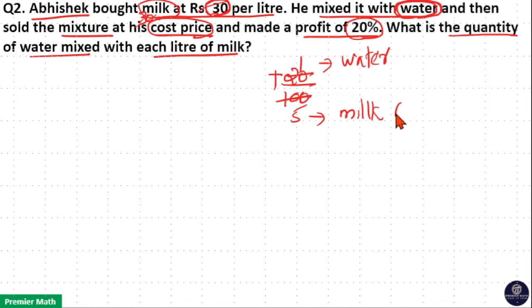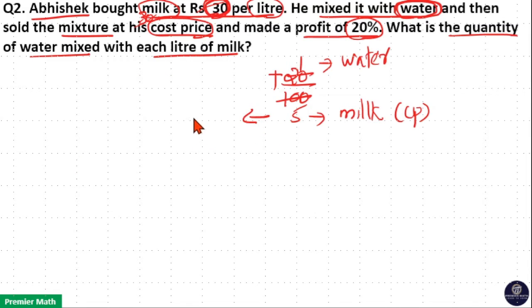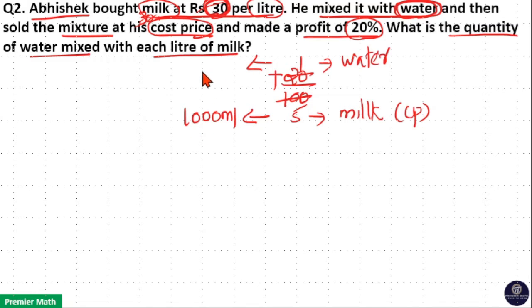Now this is the cost price — 30 rupees. This 5 parts is 1 litre, meaning 1000 ml. We need to find out what 1 part is: 5 goes 200 times into 1000, which means 1 part is 200 ml.